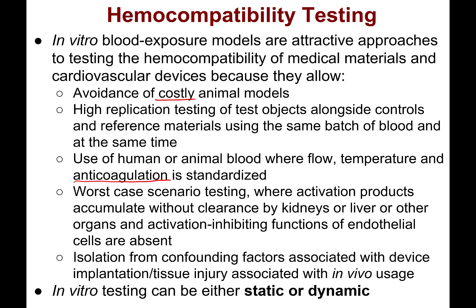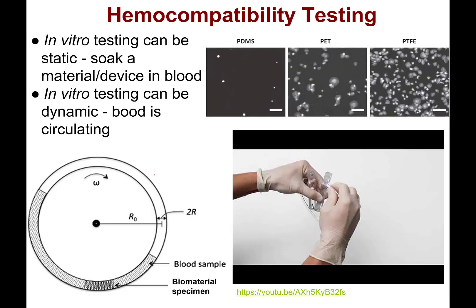When it comes to in vitro testing, our approaches can be either static or dynamic. In static testing, it's just soaking. In dynamic testing, the blood is circulating. These images show platelet adhesion onto the surface of different polymers, illustrating the type of data you might get — looking at the number of platelets attached and characterizing their morphology.